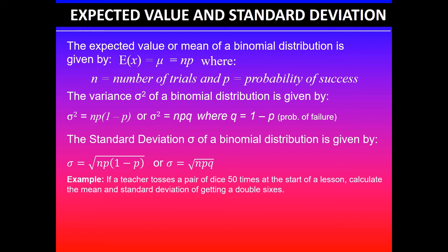Let's look at the example. If a teacher tosses a pair of dice 50 times at the start of a lesson, calculate the mean and standard deviation of getting double sixes. We're already given that the teacher is tossing a dice 50 times, so that becomes the number of trials, n = 50. We need to calculate the probability of success, which in this case is denoted by getting double sixes.